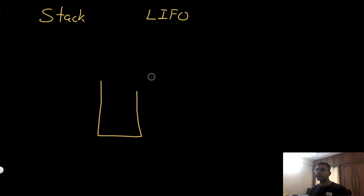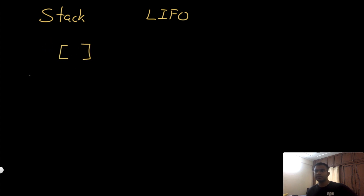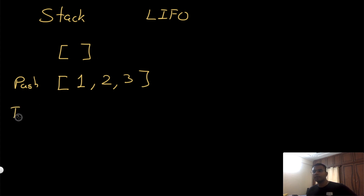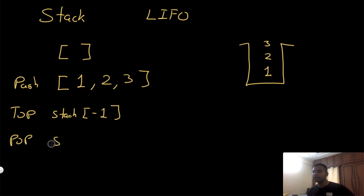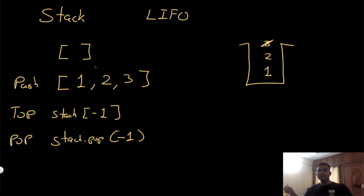So how are we going to represent this? I'll talk in terms of Python, but the basic idea stays the same. I'm going to use an array — initialize an empty array. When someone wants to push a value, I just append it to the array. So I'd add one, then two, then three. To get the top value, since I'm using an array, it's just whatever is at the last index. And to pop a value, I go to the stack and pop the last index, removing the top element.